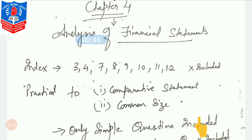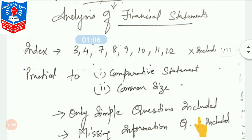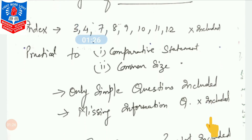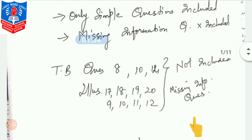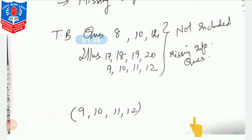If you open your textbook to page number 153, you will see in the index that the points I have mentioned — point numbers 3, 4, 7, 8, and so on — are not included. They have reduced a lot from this chapter. We need to do practicals of both comparative statement and common size statement, but only simple questions of both types are included. Missing information questions are totally erased from this year — only for the current year due to COVID.